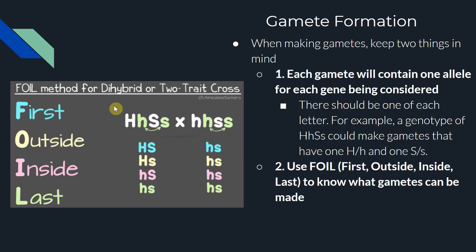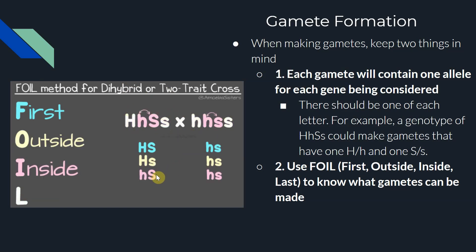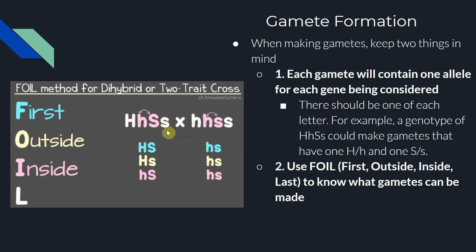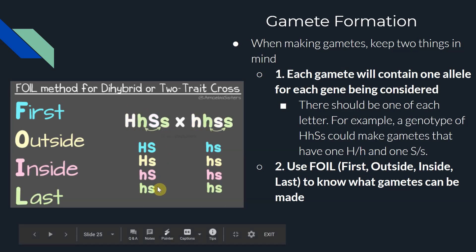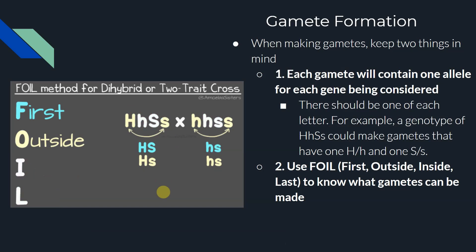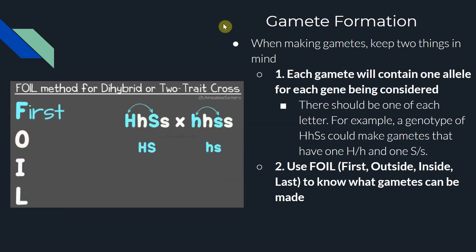The next step is the Inside letters. We take our two inside letters from the whole group — little h and big S — giving us our third possible gamete: little h, big S. And then lastly, we look at the Last letters of each pairing — little h and little s — which combine to make our final gamete: little h, little s. So the FOIL method is a helpful tool to evaluate a genotype and determine the possible gametes that can be created.